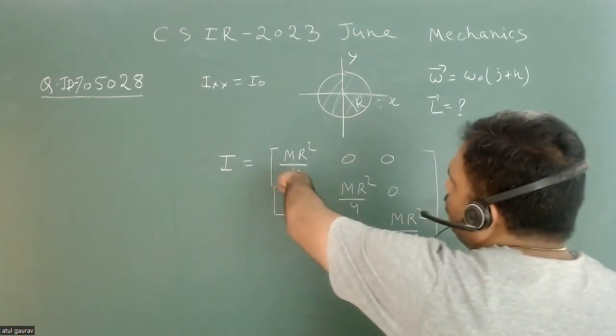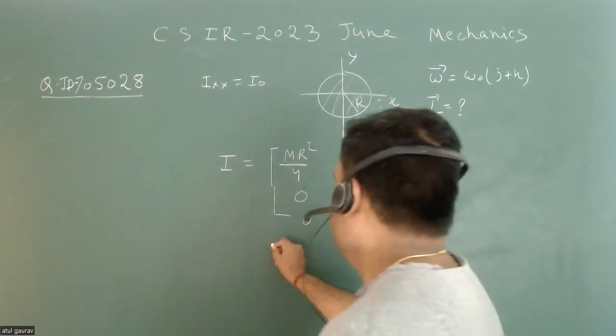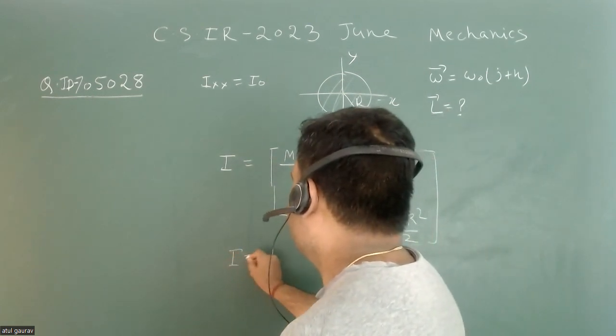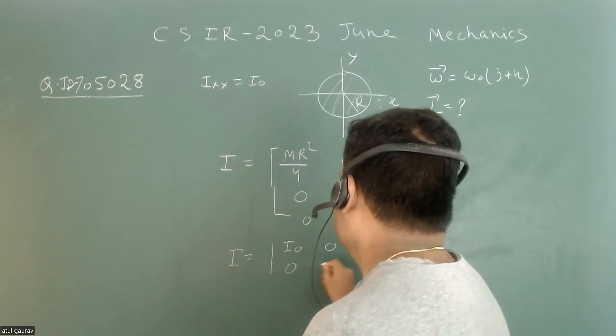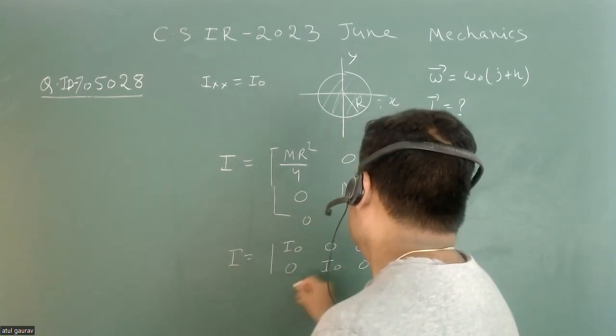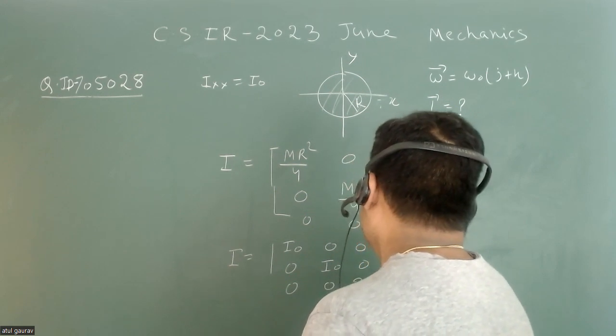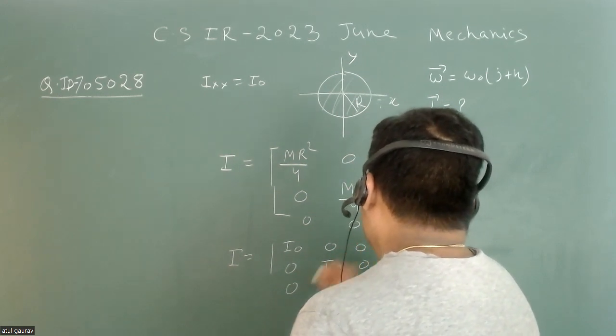What is given is this value is I₀. So I can write I equals: I₀, 0, 0; 0, I₀, 0; 0, 0, 2I₀.